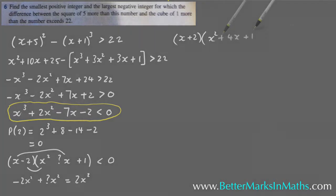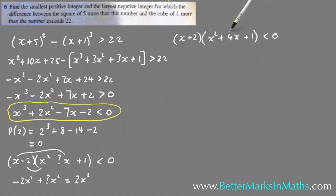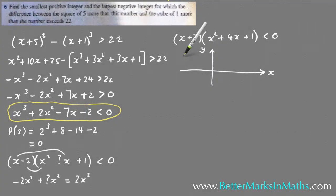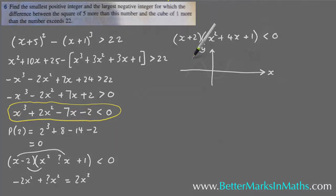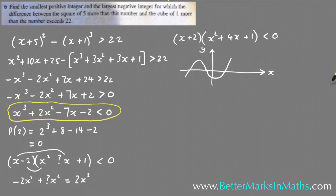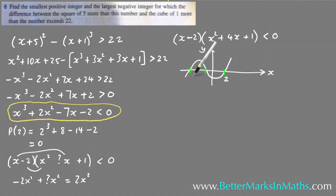So you ultimately end up with (x - 2)(x² + 4x + 1) < 0. The quadratic x² + 4x + 1 can be factorized further — it's a long process — and it gives decimal x-intercepts. The quick way is just to look at the graph. The graph shows the intercepts: positive 2 from the (x - 2) bracket, and two decimal values from the quadratic.